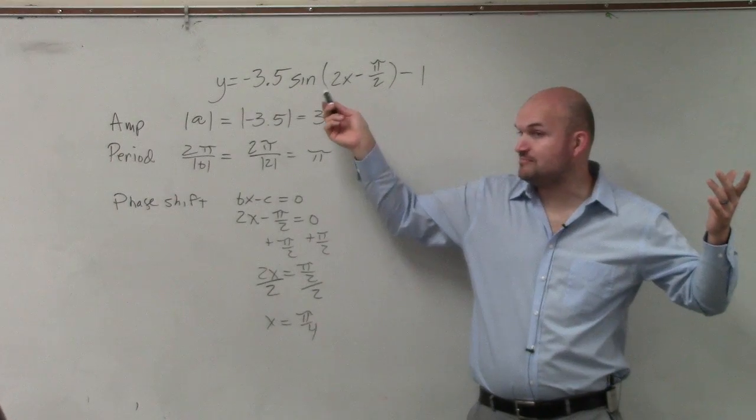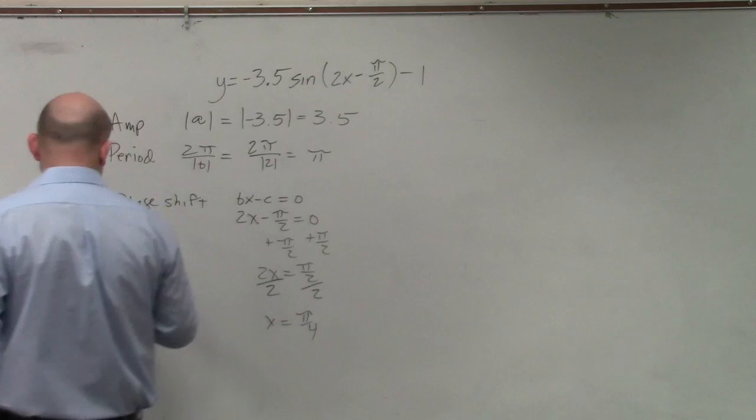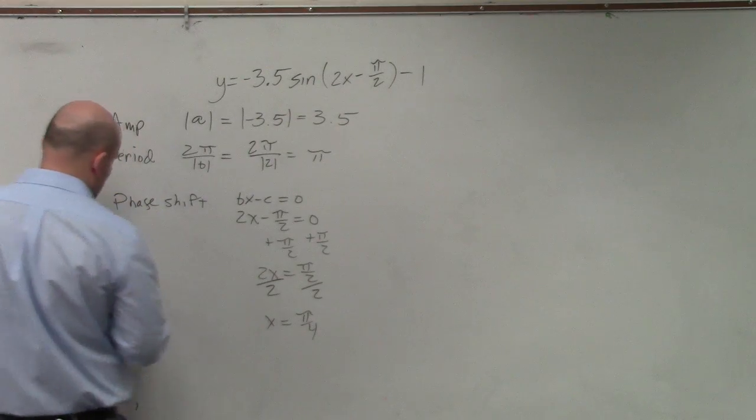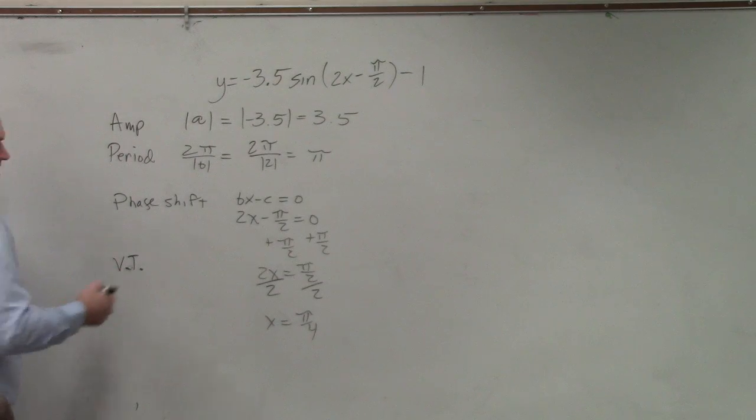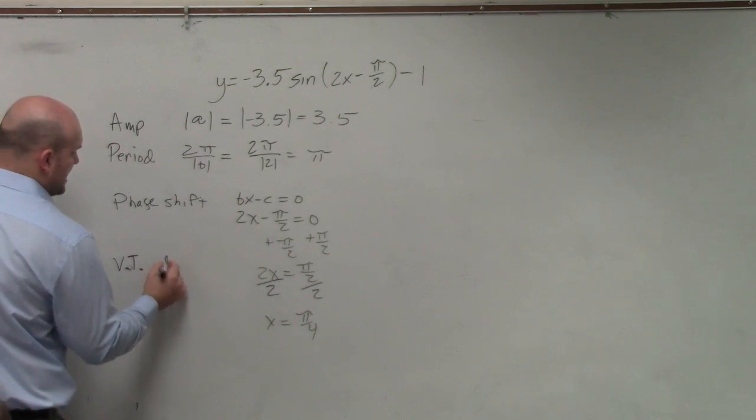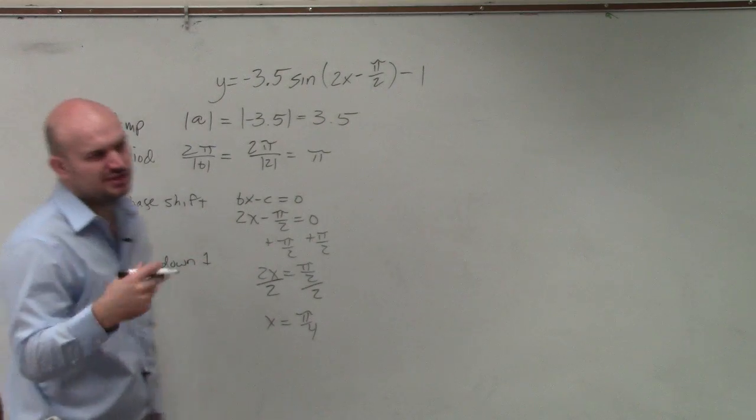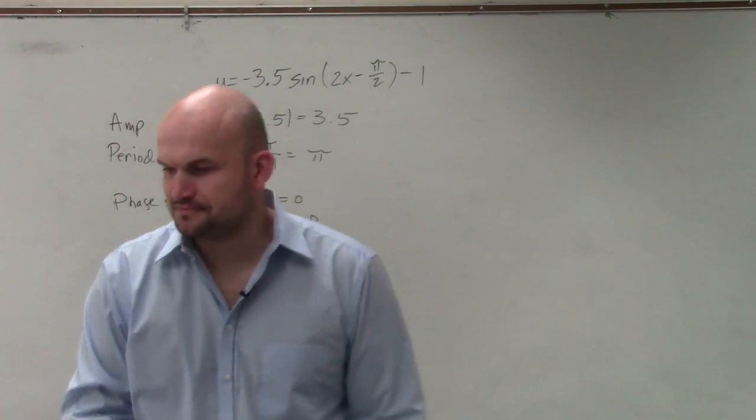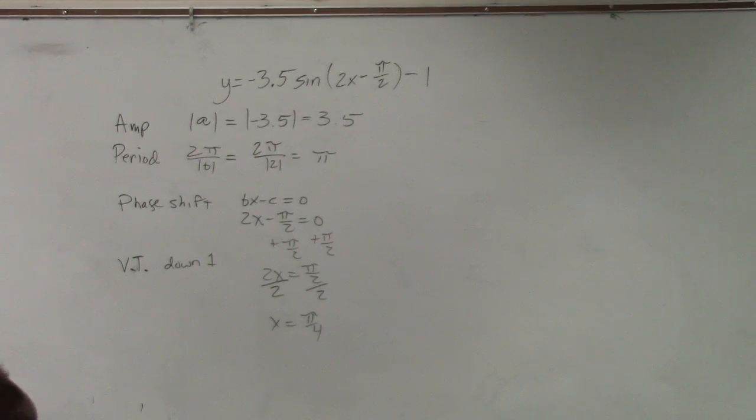The last one is the vertical translation, which I'll abbreviate as V.T., and that's down one unit because it's -1. You're shifting down, just like any other function.